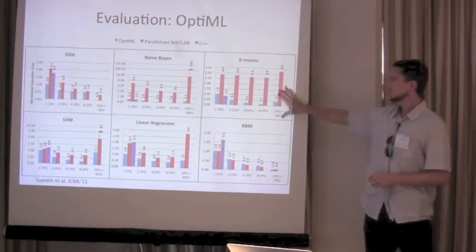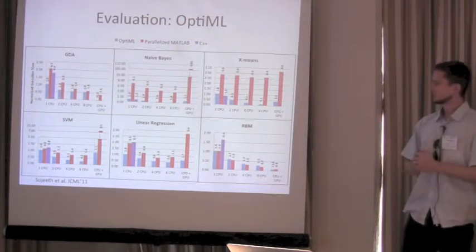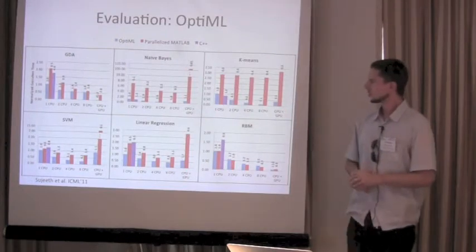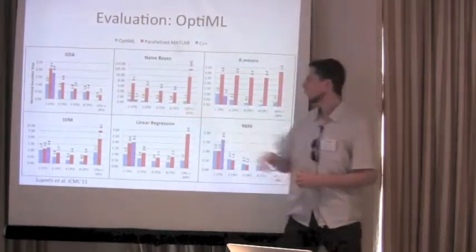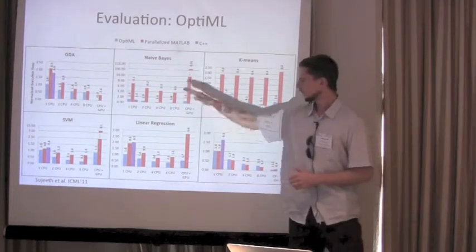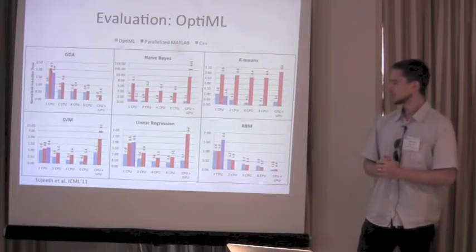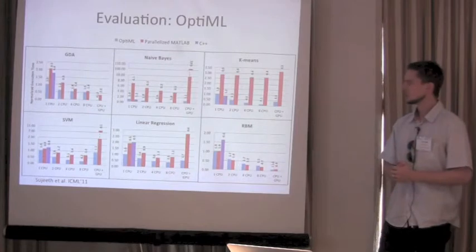For K-means and a bunch of other textbook machine learning applications, we see similar results — sometimes larger speedups over MATLAB, and generally quite a bit faster than MATLAB, several factors, with the exception of RTM, and quite close to C code.